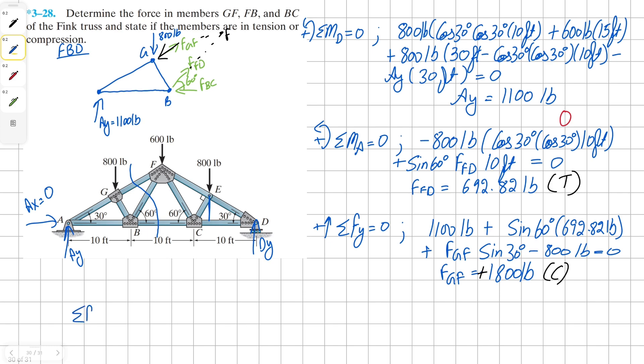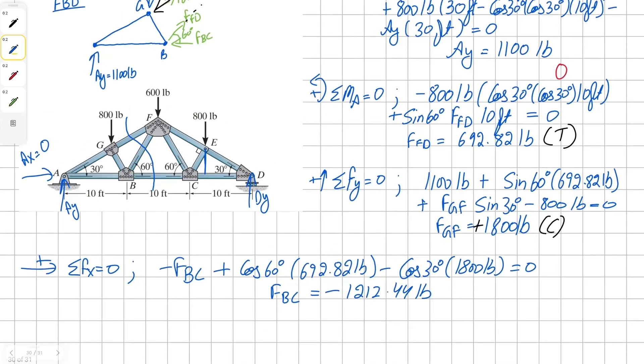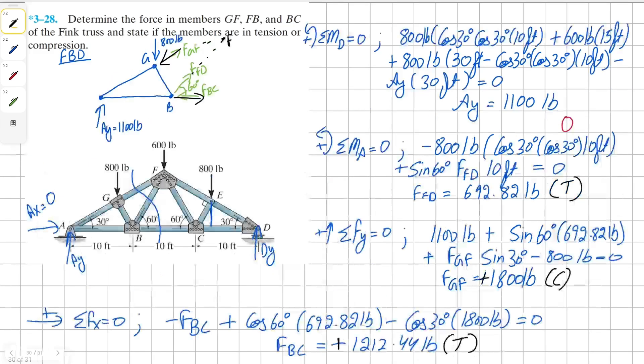Now we can sum the forces in X direction to find a solution for force BC. So we're going to have negative force BC and then horizontal component of both GF and FB, all equals to zero. So for force BC, we get our solution as negative 1,246.44 pounds. But this solution is in negative. This means our vector direction is wrong. Switching it over, we get our solution as positive. And this tells us that this member is in tension.